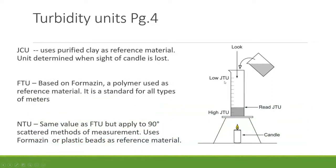The Jackson Turbidity Unit uses a transmissive device where the light source is at the bottom. You look down the center of the container as you add fluid, and when you can no longer see the candle, that's the reading — fairly primitive. Formazin units are based on a polymer standard used for all types of meters. Nephelometric Turbidity Units generate the same values as FTUs but work specifically on the 90-degree scatter method.